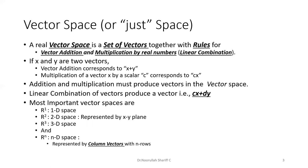A linear combination of vectors corresponds to vector addition and multiplication of a vector by a real number, producing a vector cx plus dy. The most important vector spaces are: R1, a one-dimensional space; R2, a two-dimensional space represented by the xy-plane; R3, a three-dimensional space represented by Cartesian coordinates xyz, cylindrical coordinates r-theta-z, or spherical coordinates r-theta-phi. Following the same pattern, Rn is an n-dimensional space, each represented by column vectors with n rows.